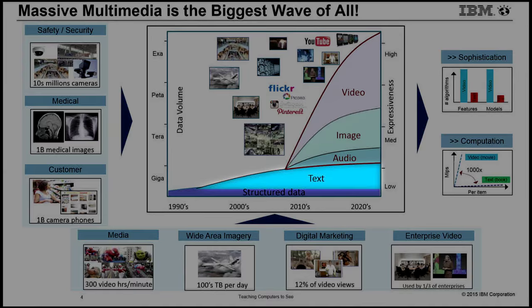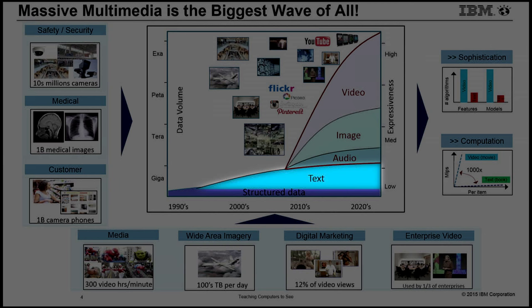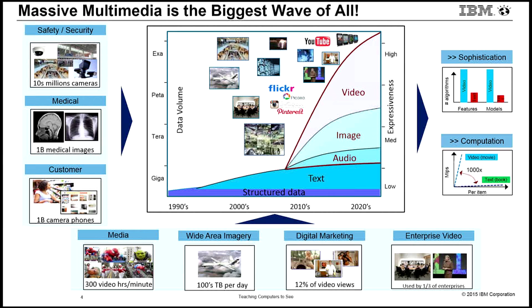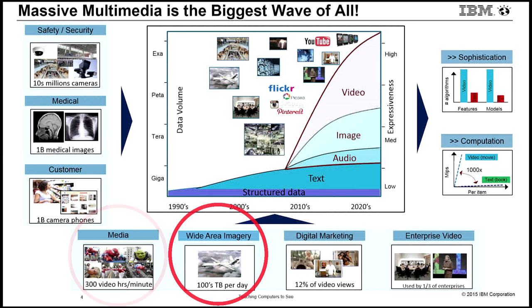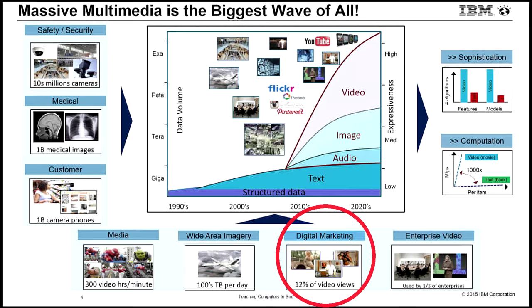Recently, text became quite important. But in the big picture, video data, image data, audio — the combination of multimedia — may be the biggest wave of all. We're seeing this in so many different industries: safety and security problems, the medical domain, consumer content, the media industry, overhead imagery from drones, enterprise, digital marketing, and so on. This is clearly big data — not just because there's a lot of it, but because it's an opportunity to apply analytics and extract information and insights from the data.